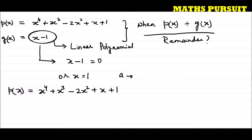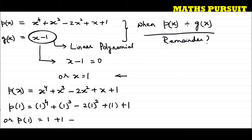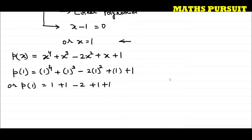Here our value of a is 1, because we got x is equal to 1 from the zero of the divisor. Replacing x with 1, p(1) equals 1 to the power 4 plus 1 to the power 3 minus 2 into 1 to the power 2 plus 1 plus 1, which gives us 1 plus 1 minus 2 plus 1 plus 1.